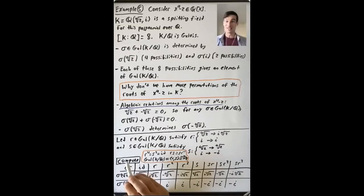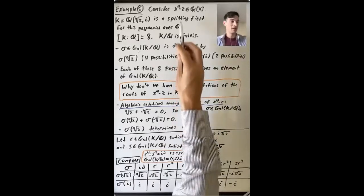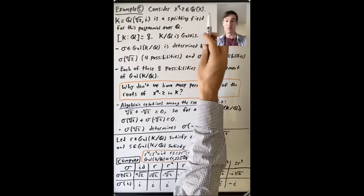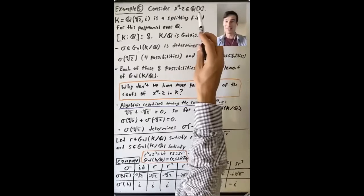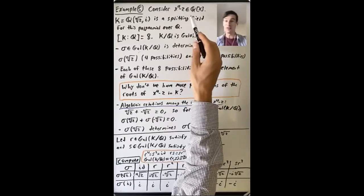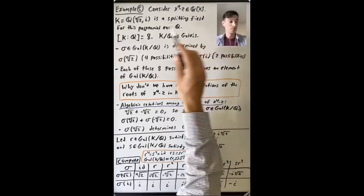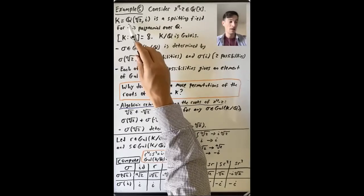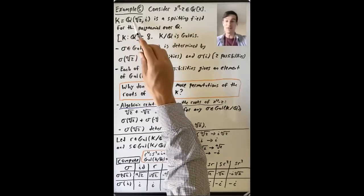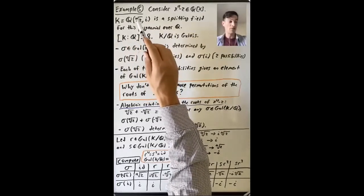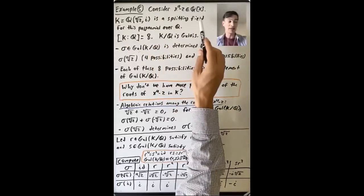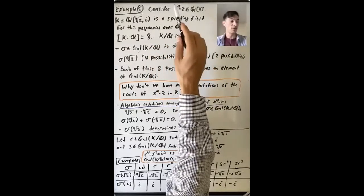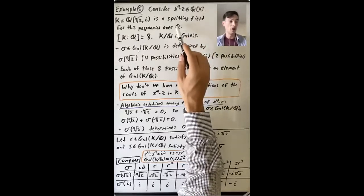We'll end this lecture by discussing one more example. Let's consider x to the fourth minus two — it's a polynomial in Q[x]. We've talked about the splitting field for this polynomial before. We can take K to be the field generated over Q by the fourth root of two and i. And we know that this is a splitting field for this polynomial x to the fourth minus two over Q.